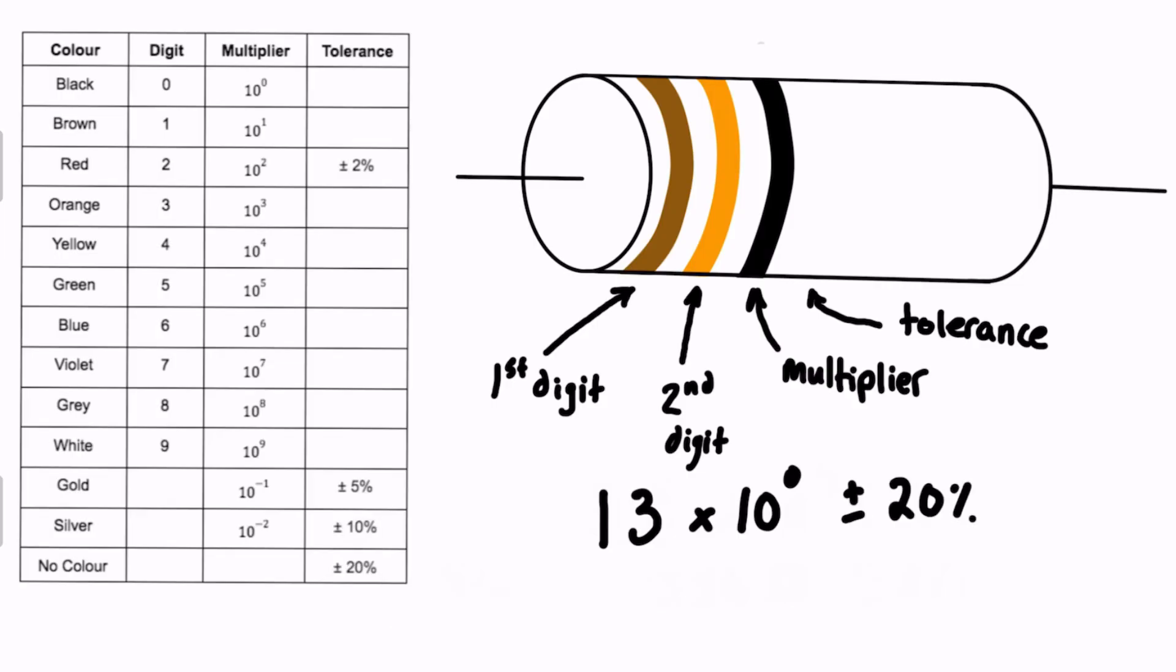So don't get thrown off when you only see 3. It's okay. Don't forget that no color is actually an option as well, at least when it comes to tolerance. So 13 times 10 to the 0 is just equal to 13 times 1. So our answer here is just 13 ohms plus or minus 20 percent.